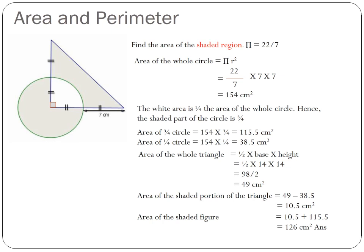So we know the radius is 7 centimeters. When we apply the formula to find circle area, we will get 22 over 7 times 7 times 7, and this is equal to 154 square centimeters.